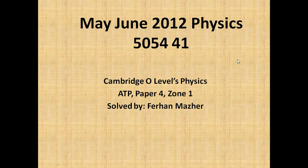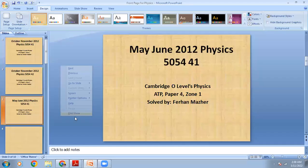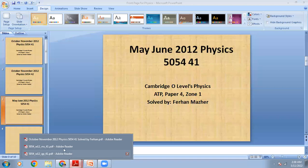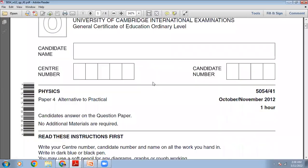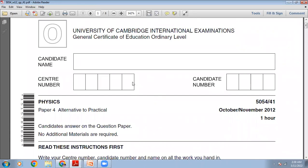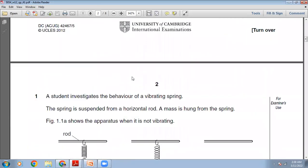Good morning students, my name is Saran and today is 11th of May 2022. I am with the 11th Cambridge class studying Physics 5054. Today we have set our heart to solve an ATP paper — paper four — and we have selected May/June 2012, zone one. The time allowed for this paper is one hour, so let's start.